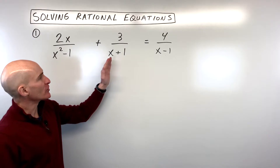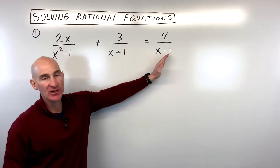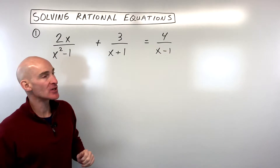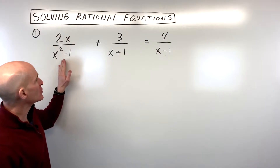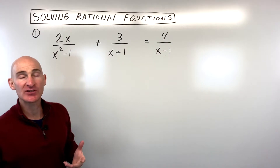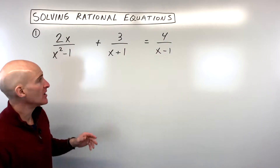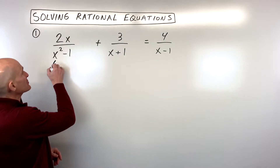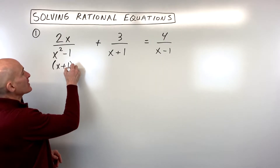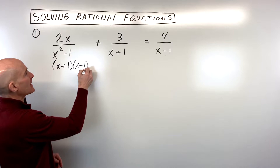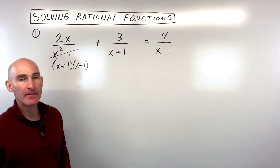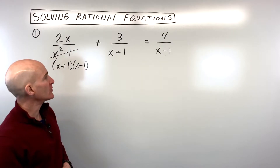What I like to do first is get a common denominator for all three of these fractions. In order to do that, the first thing you want to do is factor the denominators as much as you can. This one you can see is a difference of two squares, so it's going to factor as x plus 1, x minus 1. If you need to review factoring, check out some of my Learn How to Factor videos.